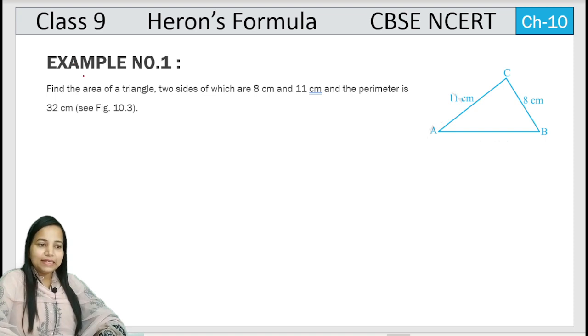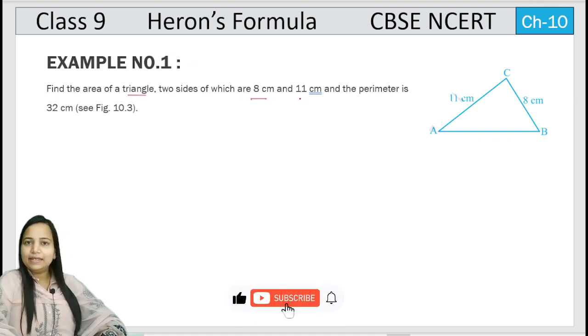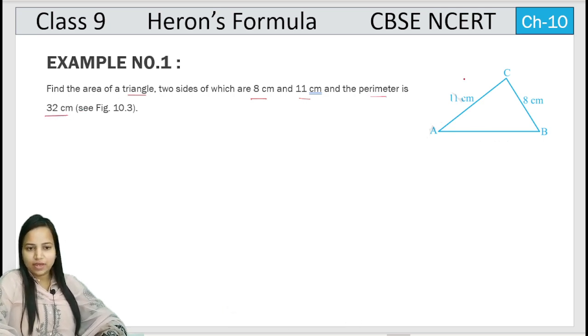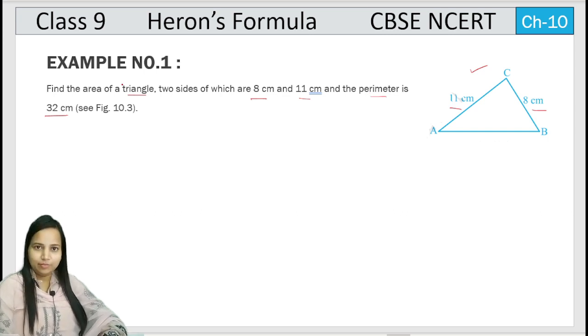Find the area of a triangle, two sides of which are 8 cm and 11 cm, and the perimeter is 32 cm. So we have given this diagram. This triangle has two sides given: one is 11 cm, another is 8 cm, and the perimeter given is 32 cm. So we need to find the area of triangle.